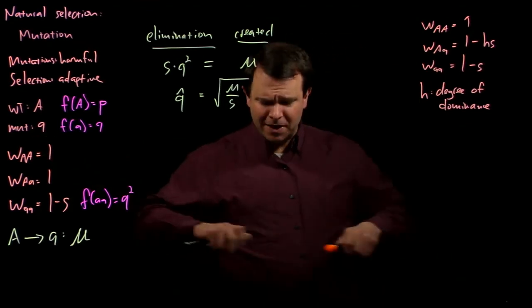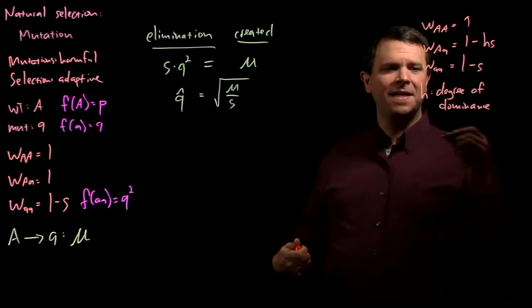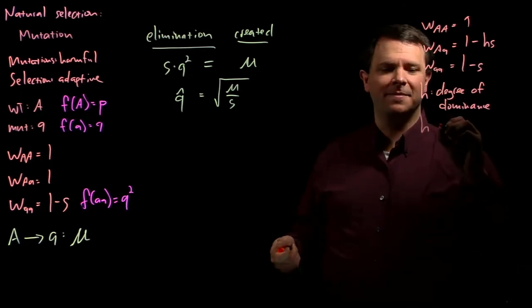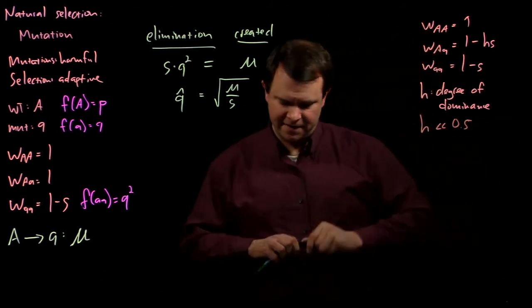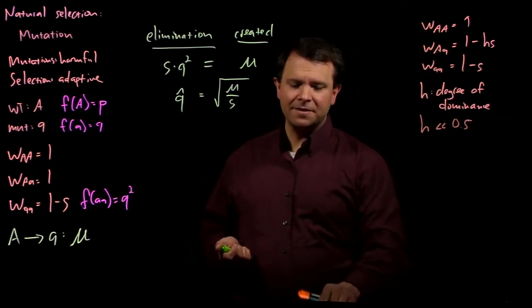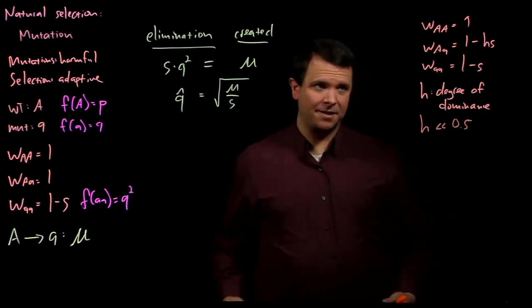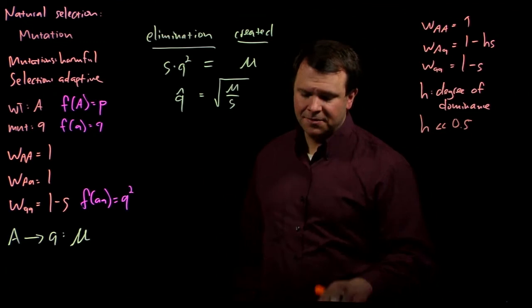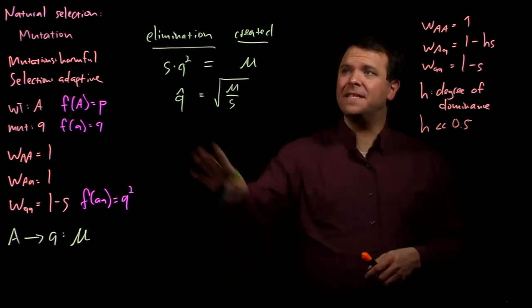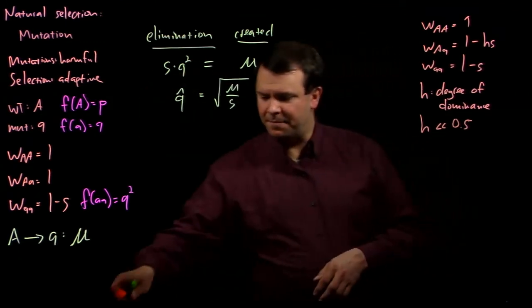In the real world, most of these alleles that show partial dominance, H is much, much less than 0.5. These alleles are a little bit penetrant, a little bit dominant, but not a whole lot. Now, let's see how this plays out at a population level.